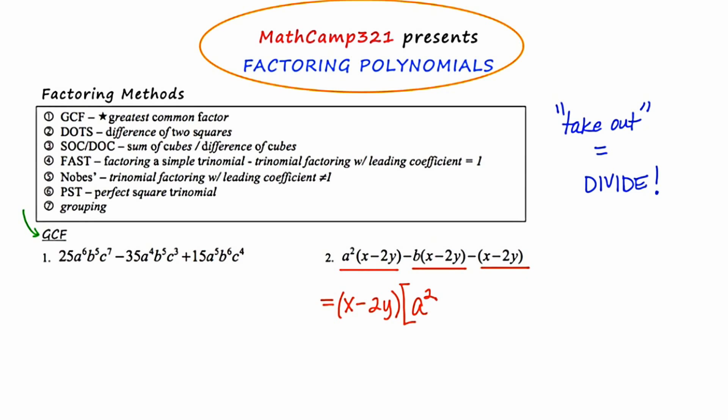If we move to the middle term where we have a negative b times x minus 2y and we divide by x minus 2y, we're left with just minus b. And then if we go to the third term where we have negative x minus 2y and we divide by x minus 2y, we're left with negative one. So what we've just done in this problem is we've factored out the greatest common factor. You'll notice the first factor was written in parentheses and the second one was in brackets — as a final step, just write both of these with parentheses.